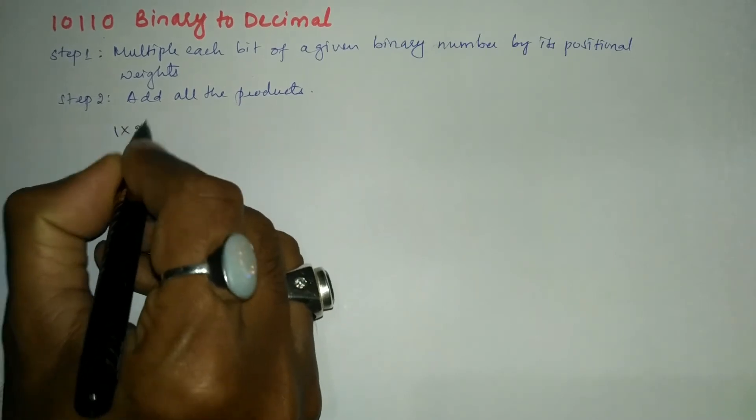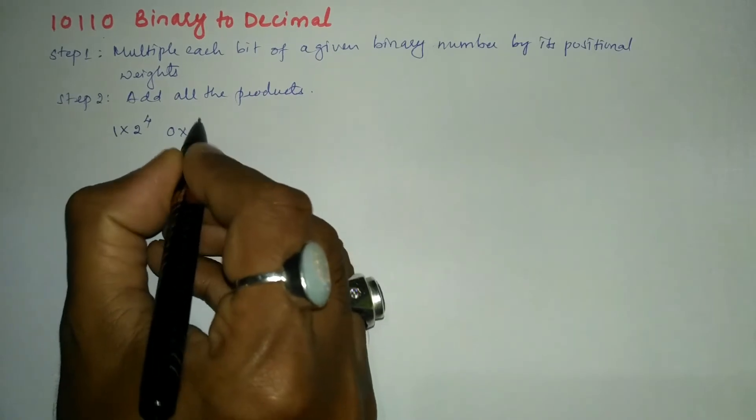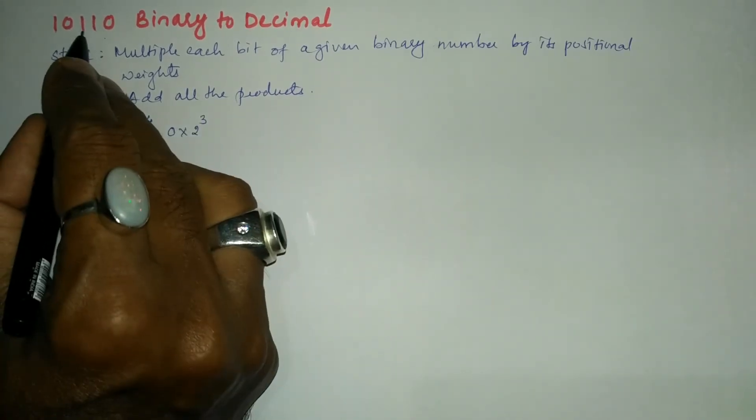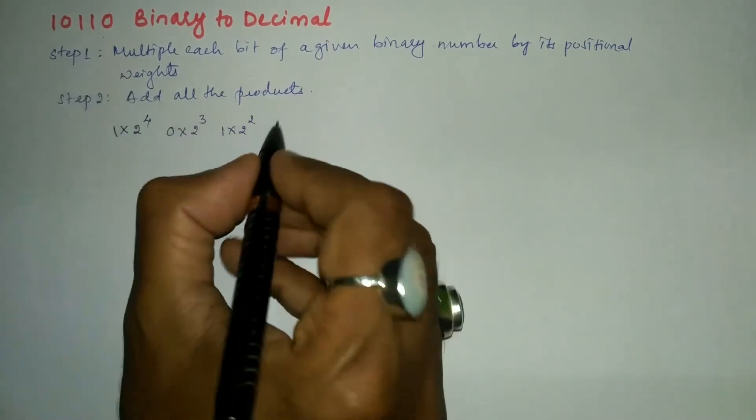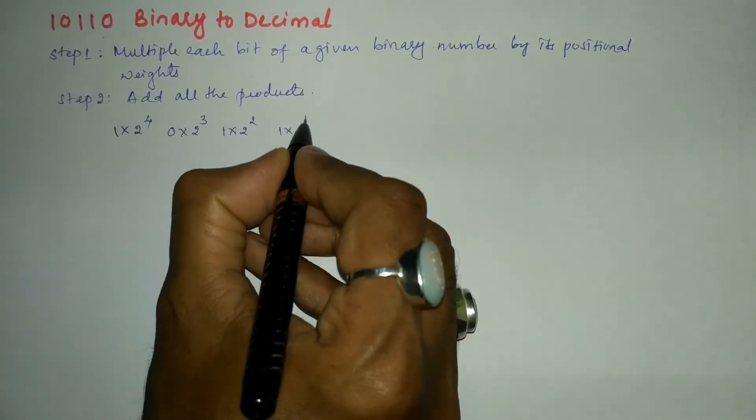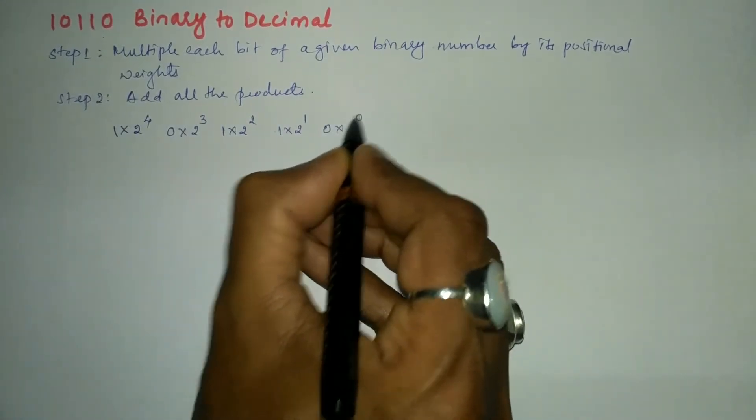...into 2 to the power 4. Next bit is 0 into 2 to the power 3. Next bit is 1 into 2 to the power 2. Next bit is 1 into 2 to the power 1. Next bit is 0 into 2 to the power 0.